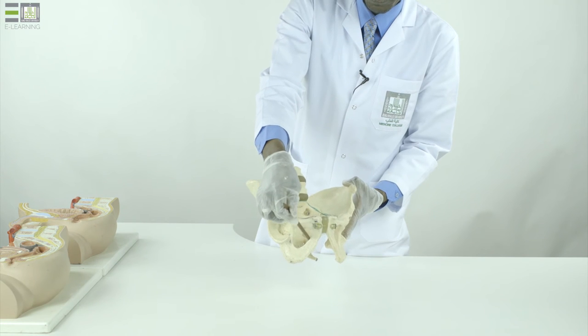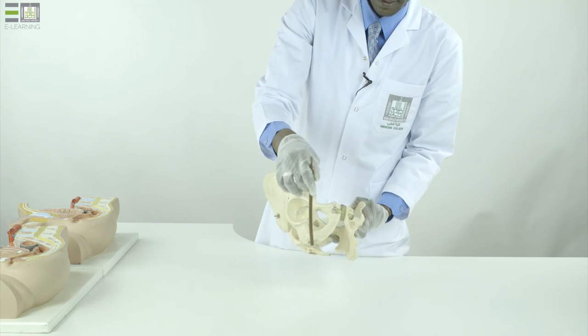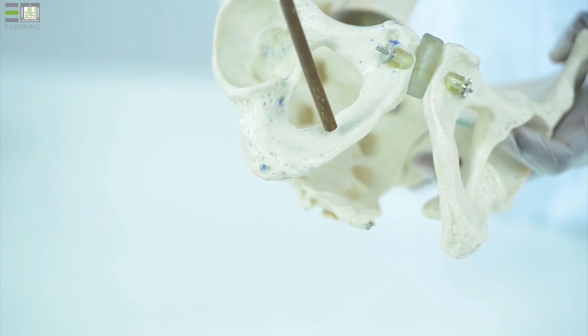This is called the obturator foramen. The ischium lies posteriorly, consisting of a body and ramus.